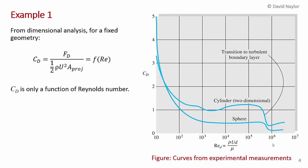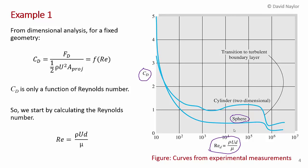Here's a figure from the textbook showing the variation of drag coefficient Cd versus Reynolds number. For a fixed geometry such as the sphere, you get a single curve. This drag coefficient versus Reynolds number relationship is based on experiments — measurements taken with different sized spheres and cylinders in different fluids, not an analytical curve. To calculate the drag coefficient, we need to calculate the Reynolds number and look it up on this curve.